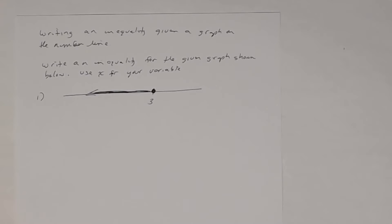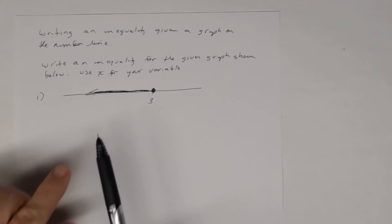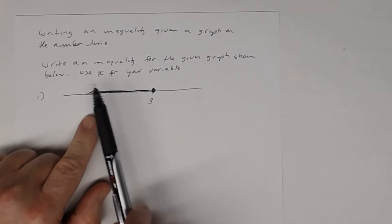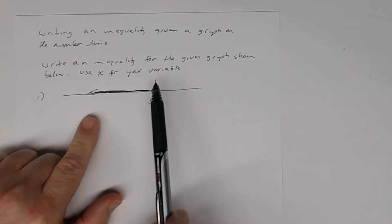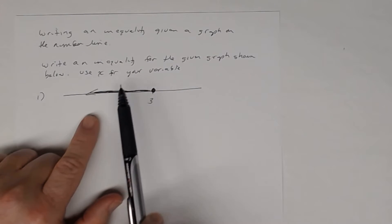In this lesson, we're going to learn how to write an inequality given a graph on the number line. You'll be given a graph that looks like this, and the directions will say write an inequality for the given graph shown below using x.